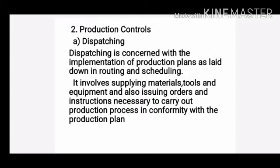The functions of production control are: first, dispatching; second, follow-up; and third, inspection. The first function is dispatching. Dispatching is concerned with the implementation of production plans.